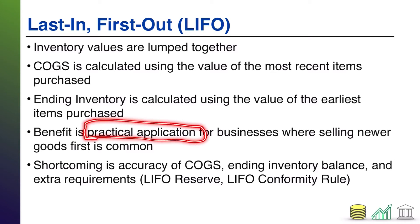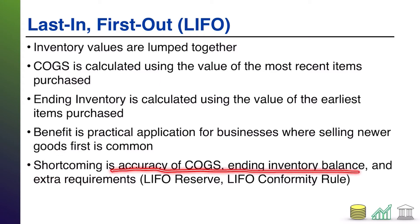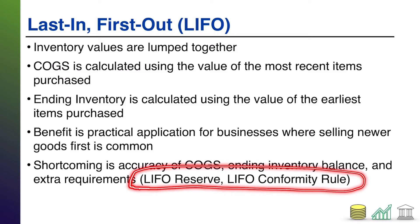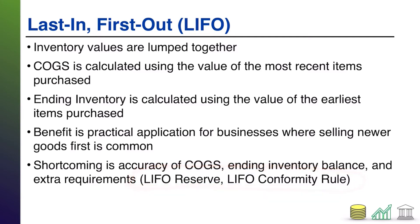I say practical application because it's very difficult to track every single item individually — it's very difficult to uniquely barcode every item, to code every item in the system. It's resource intensive and compute intensive, so this is more practical: you make an assumption about the way things are flowing through the system. The shortcoming, though, is that your COGS and your ending inventory are going to be inaccurate — not perfectly correct — because you're assuming what people bought rather than tracking what they actually bought.